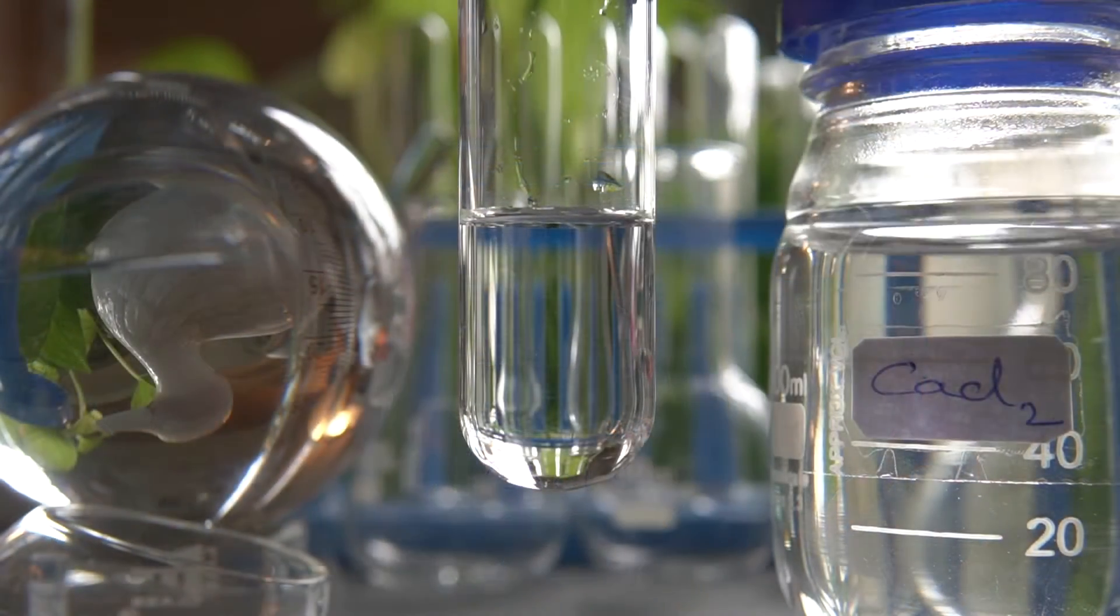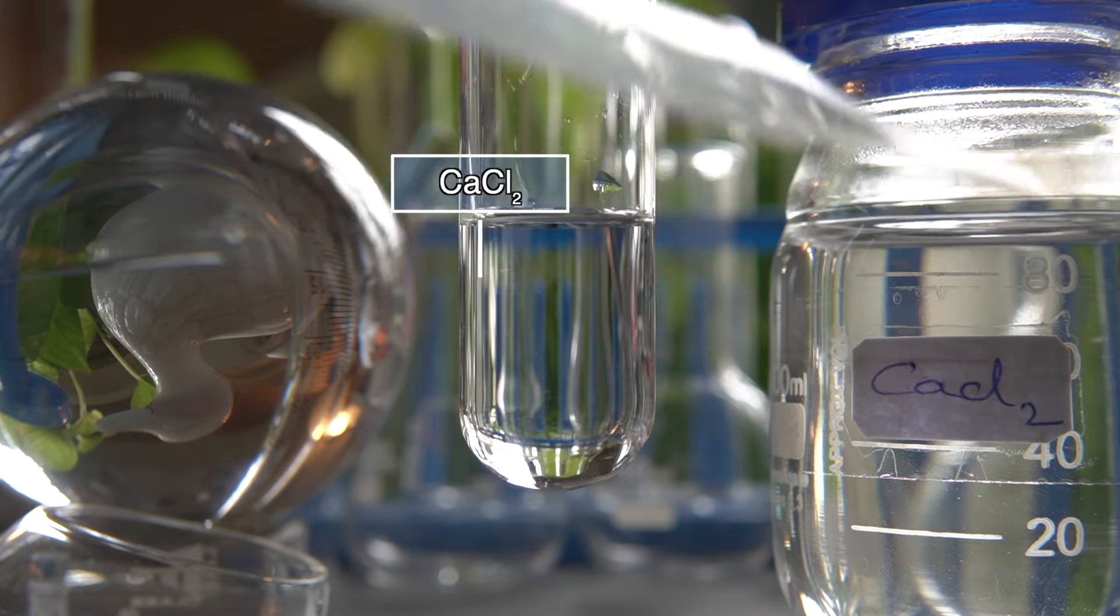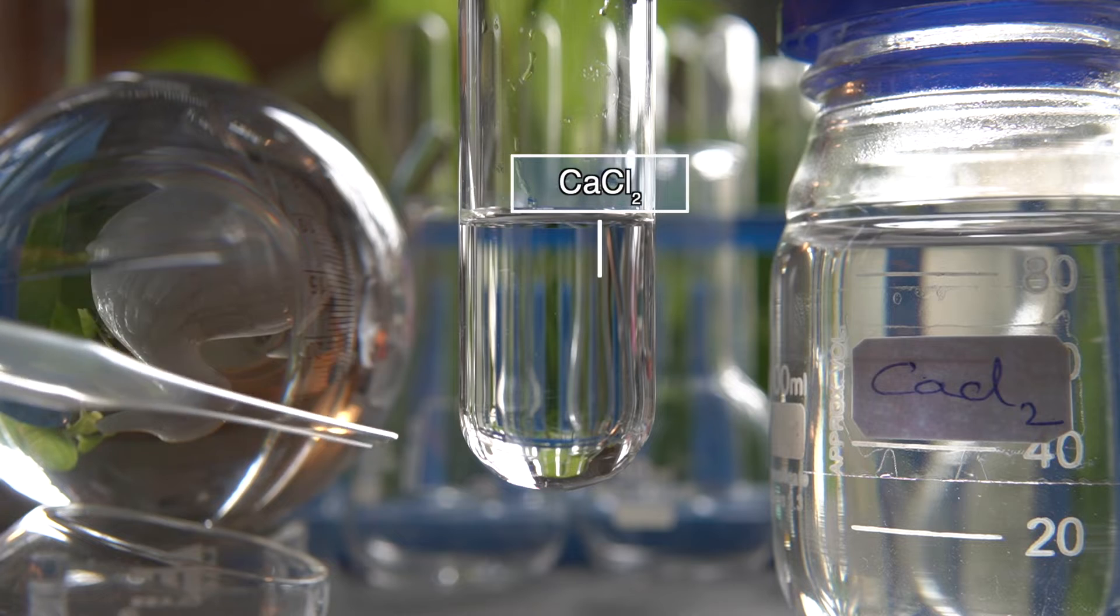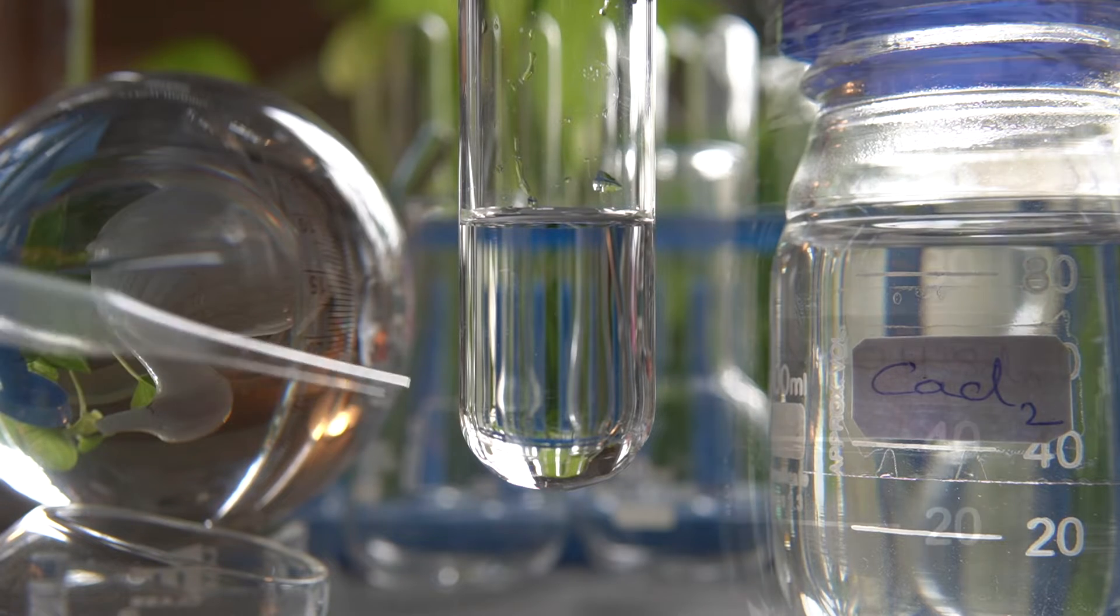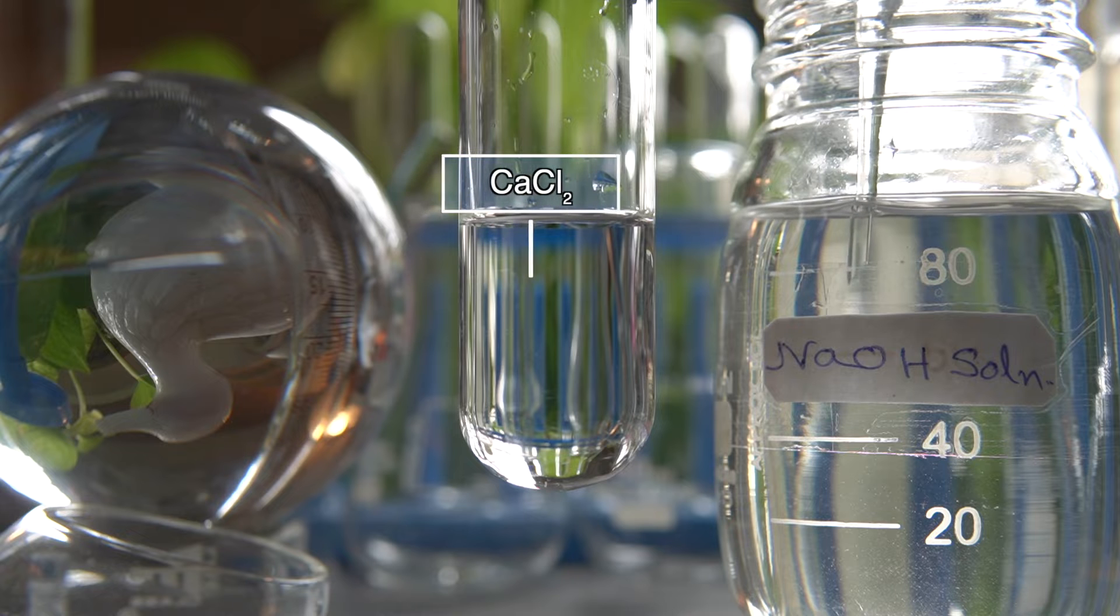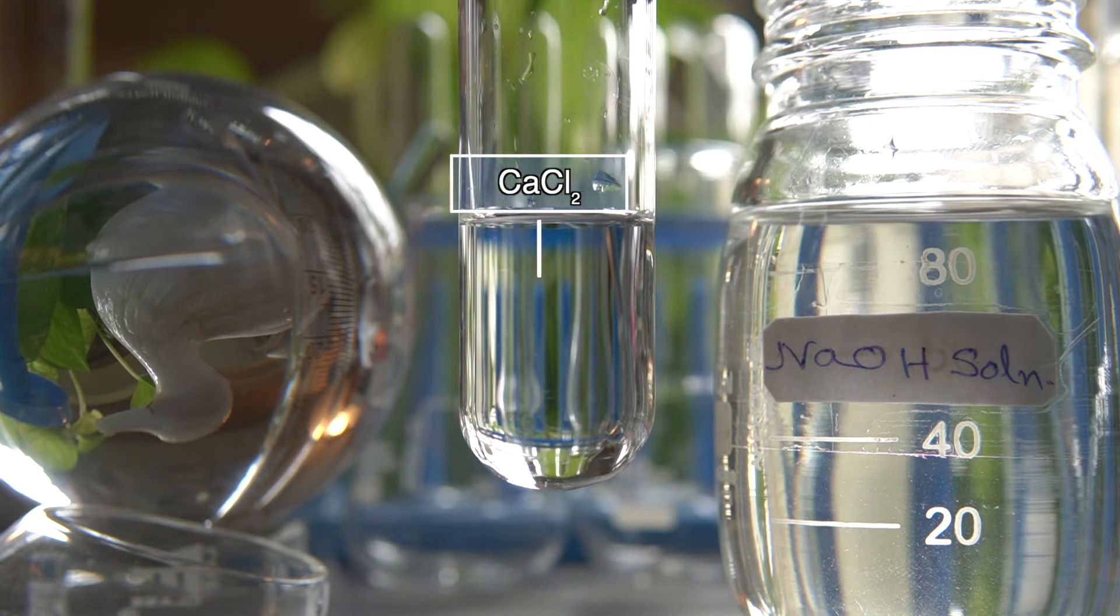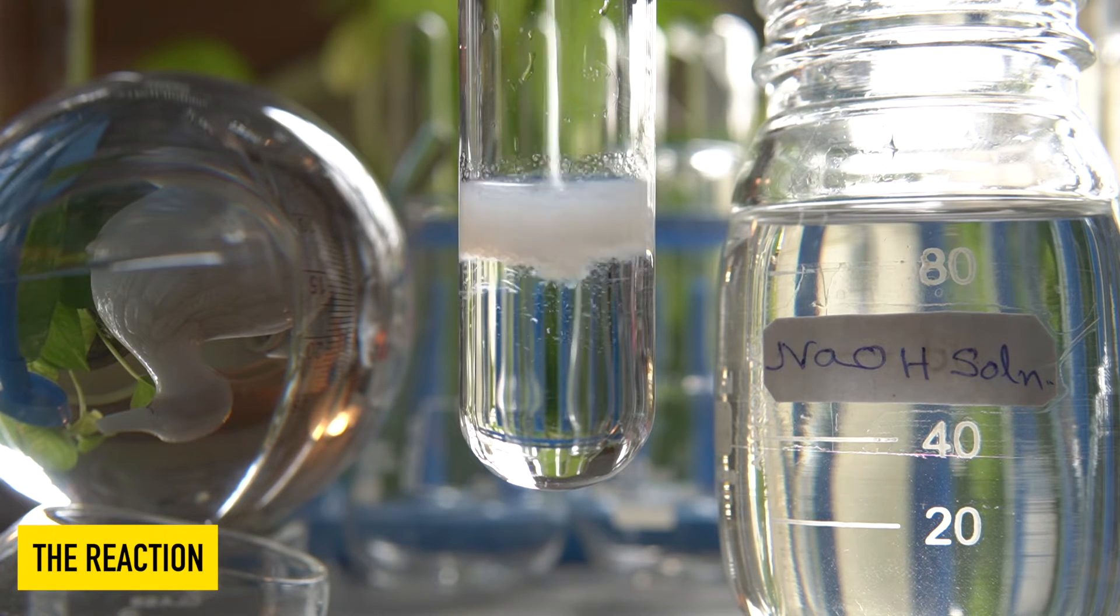Now to initiate the chemical reaction, we will take some amount of calcium chloride in this test tube. Now we will add sodium hydroxide solution into the calcium chloride solution and observe the effect.